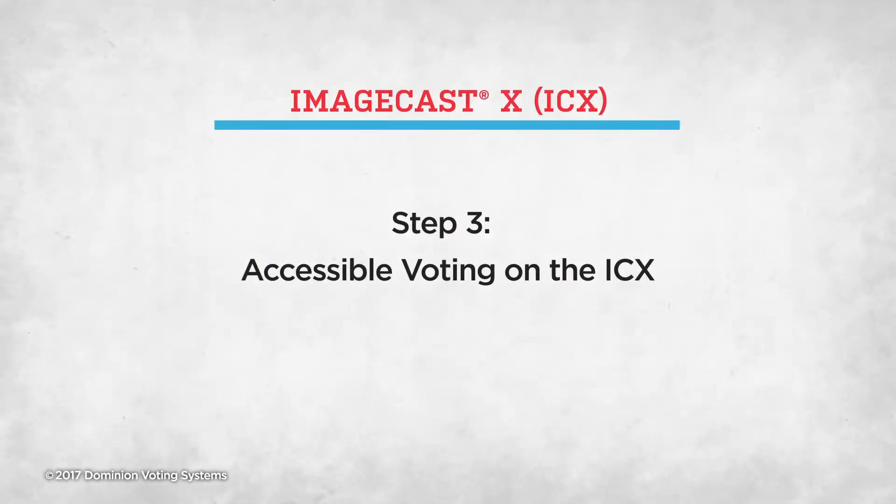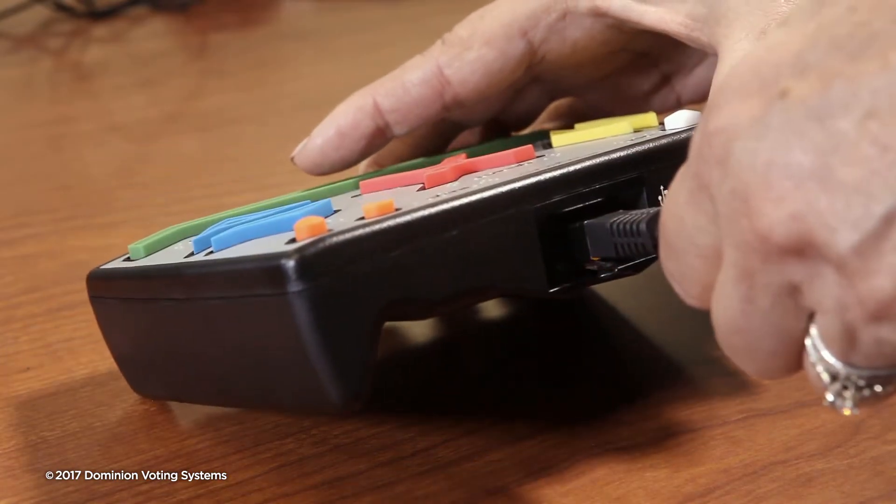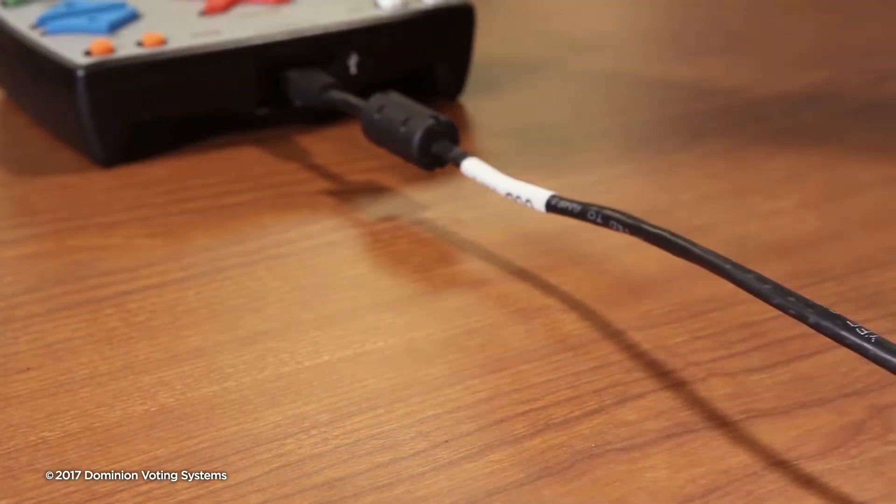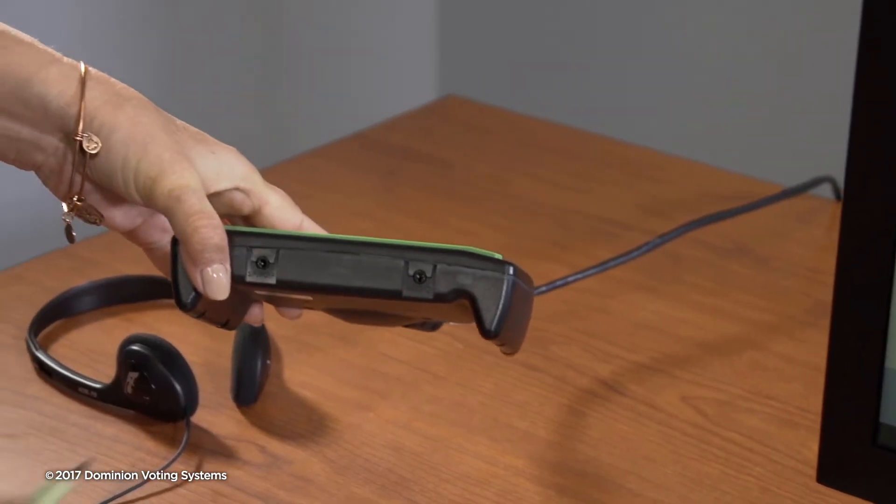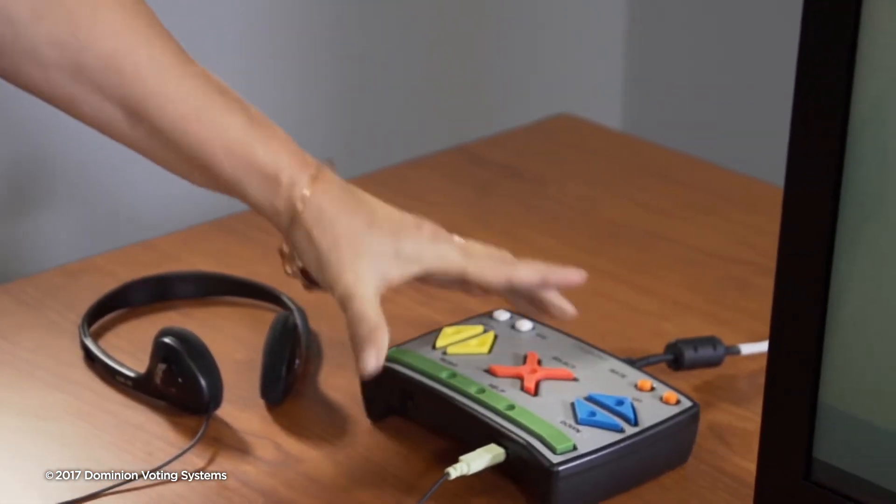Accessible Voting on the ICX. Before voting session, confirm that the ATI controller is connected to the ICX and that the preferred accessible voting input device is plugged into the ATI.